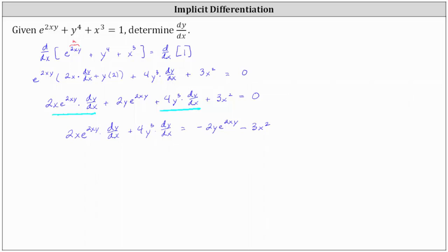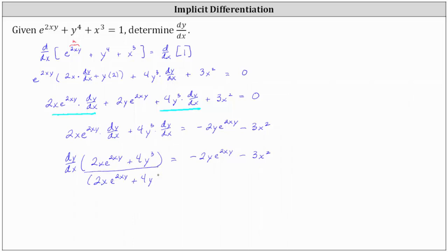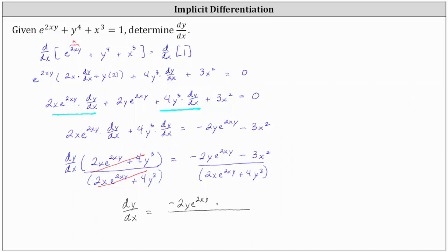Next, we factor out dy/dx on the left, giving us dy/dx times the quantity 2x e to the power of 2xy plus 4y cubed, with the right side remaining the same. The last step is to divide both sides by 2x e to the 2xy plus 4y cubed. This leaves us with dy/dx equals the quantity negative 2y e to the 2xy minus 3x squared, divided by the quantity 2x e to the 2xy plus 4y cubed.